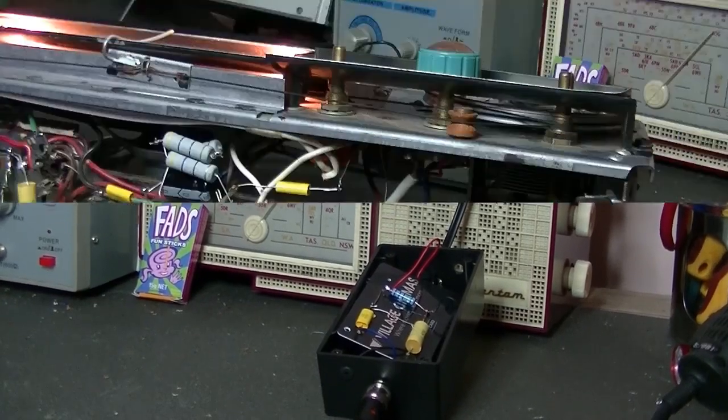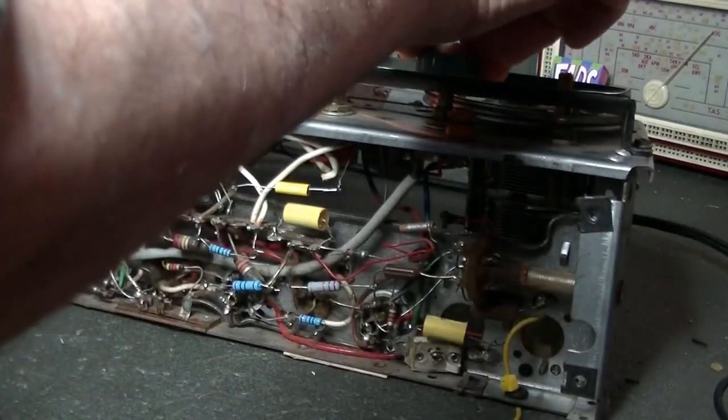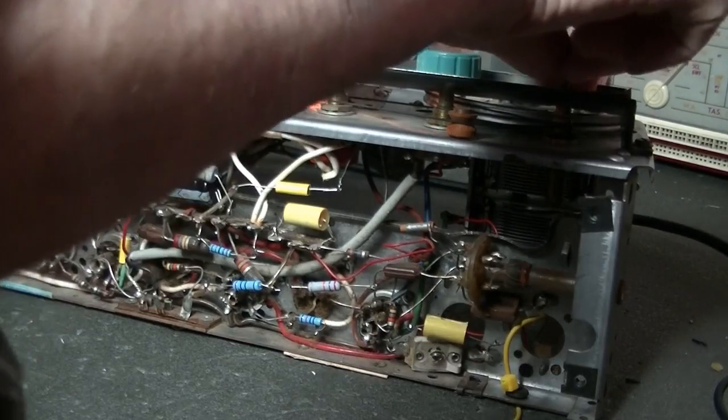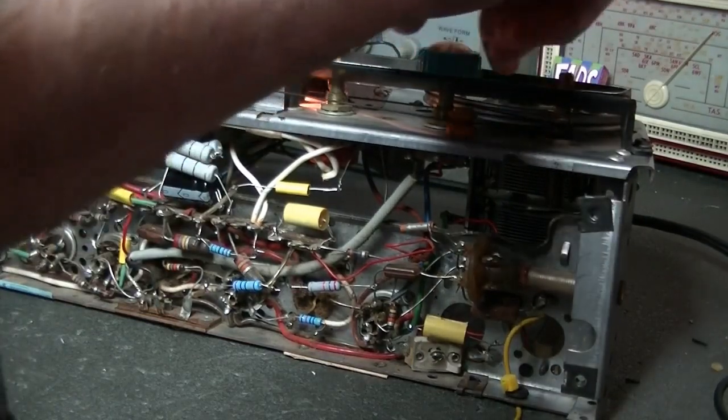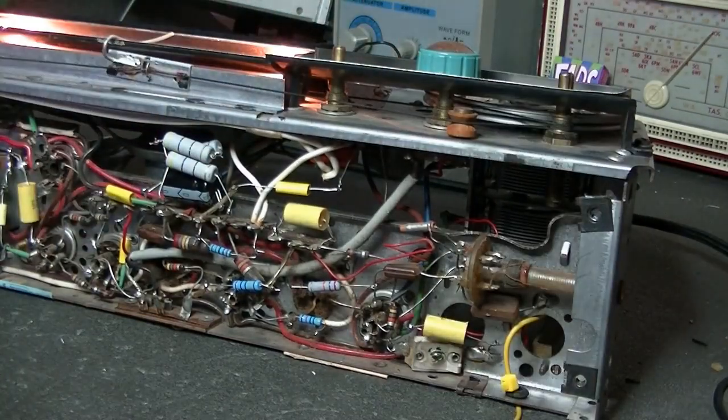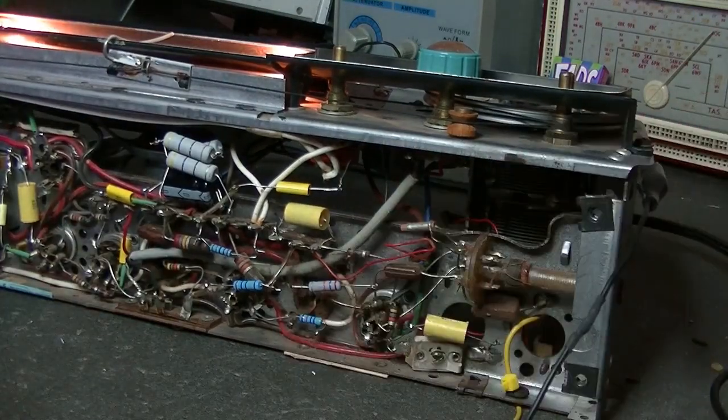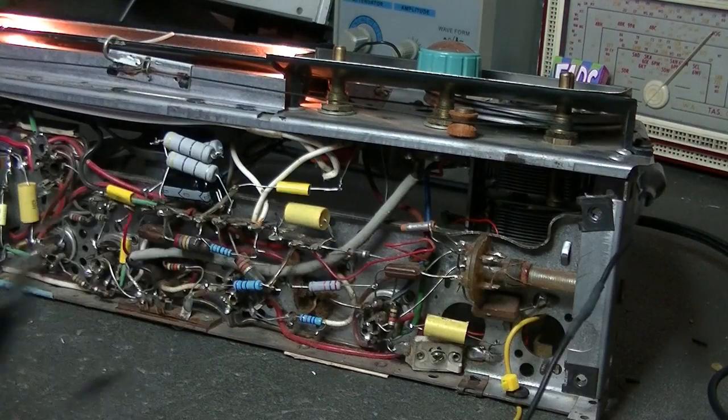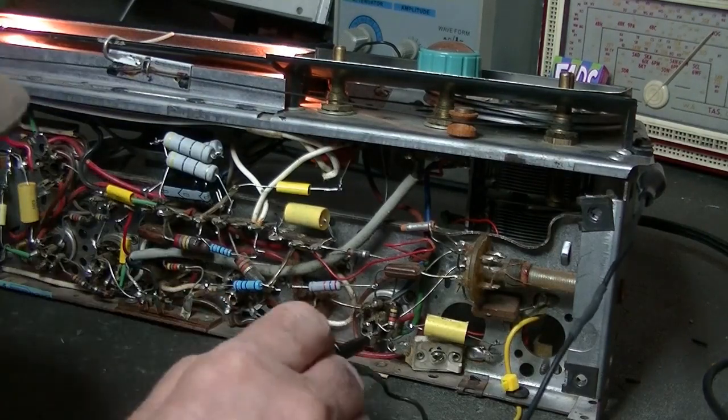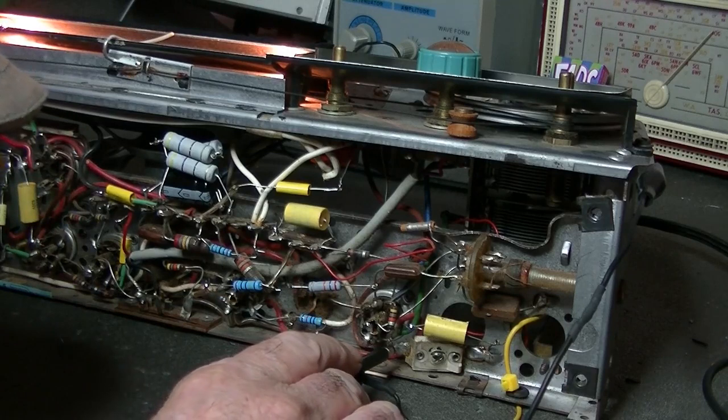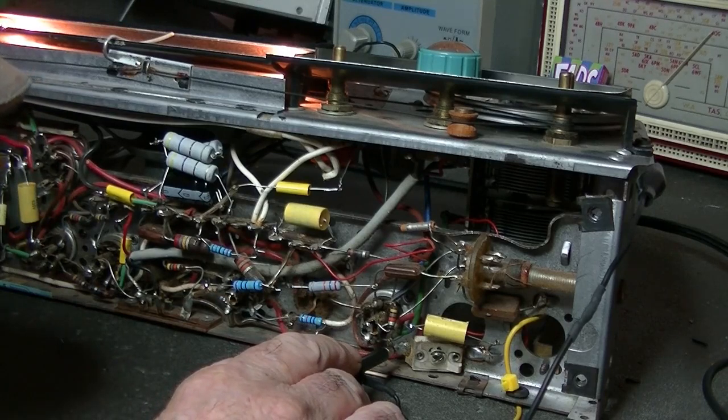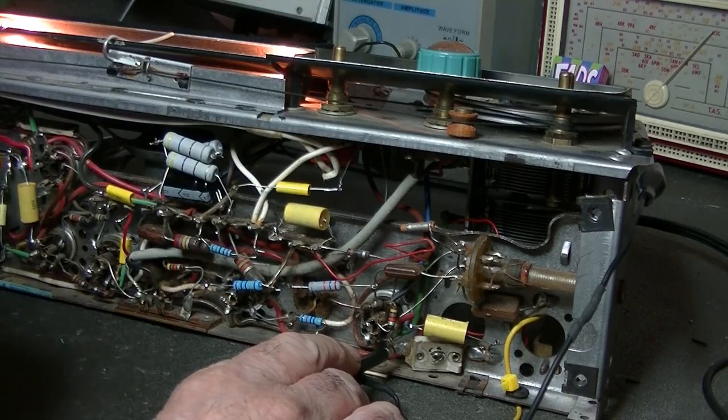Okay, here's the Chrysler. Let's turn the volume off and the Bantam is still on. Let's earth the probe and go to the grid on the mixer valve and see what we get. [radio audio playing] Not bad.